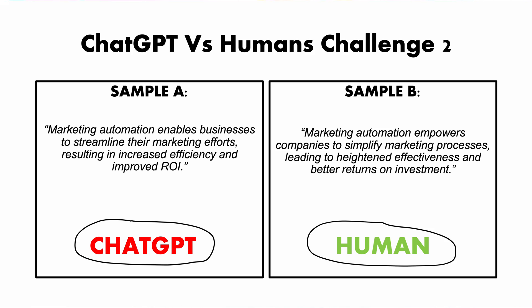Okay, sample A was generated by ChatGPT and sample B was written by a human. Did you guess correctly this time? Let's keep going and head on to the final example.